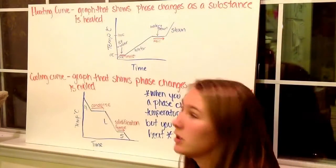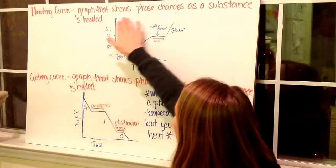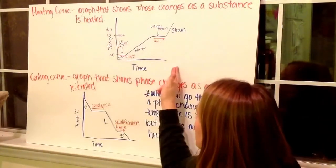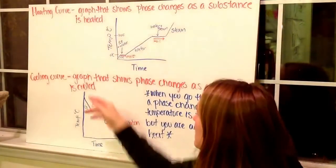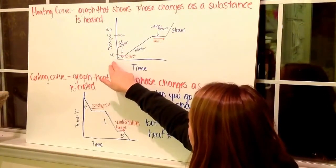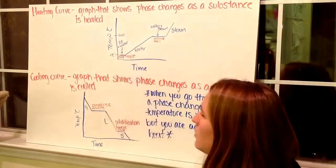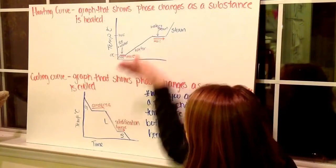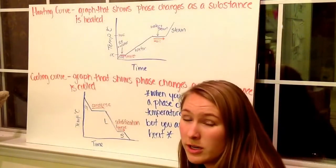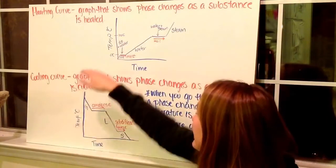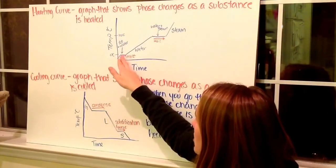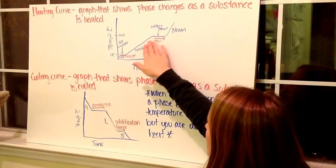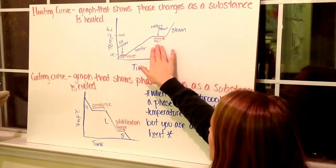Next we have heating and cooling curves. A heating curve is a graph that shows phase changes as a substance is heated. So we have temperature versus time for our given substance. We start down at the bottom. We have a slanted line where it shows that the time is increasing as is the temperature. Then a flat line, which shows that the temperature is no longer increasing or decreasing, but that the time is going on. At this point is where phase change occurs. Then again, the phase has changed and we move up in temperature and time.